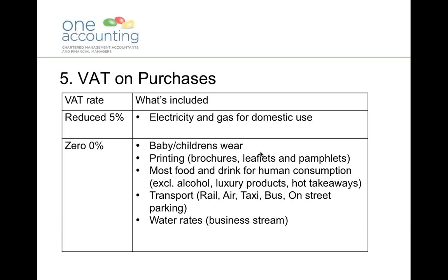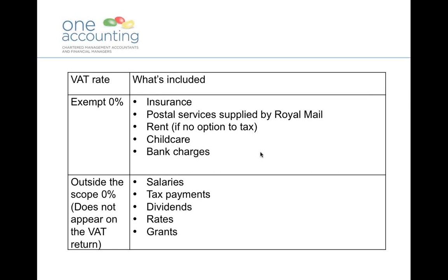Under EU rules, the government can at some point apply a VAT rate to zero-rated items. There's nothing to stop the government putting a 20% VAT rate on street parking, for example — politically whether they want to do that is another question. The exempt rate is also 0%, but this means it falls completely outside the remit of government to increase to say 5%. Typically things that are exempt include insurance, childcare, bank charges, stamps provided by the Royal Mail, and rent.